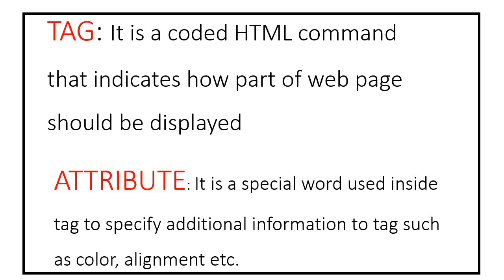The definition for a tag: it is a coded HTML command that specifies how part of a web page should be displayed. Every HTML document will be a collection of tags only — no other programming code, only tags. Those tags will contain attributes. Attributes are special words written inside a tag that specify additional information, like changing the color of a line or aligning data to the left or right.